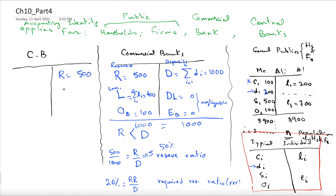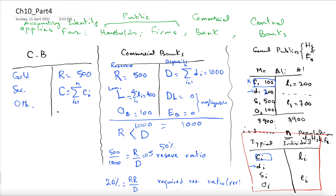The central bank prints the money — the cash in the hands of people is sigma CI, from I equals 1 to N, which is money in circulation outside the banking system. The deposits are inside the banking system. The central bank also holds gold, securities, and other assets, and may issue discounted loans as assets.